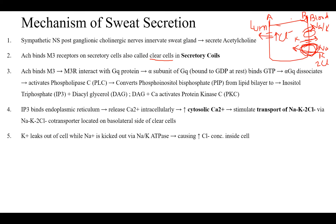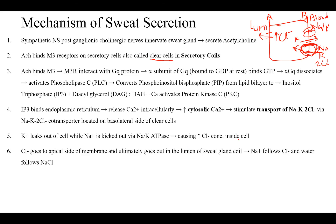Potassium leaks out of the cell while sodium is kicked out via the sodium-potassium ATPase, causing an increase in chloride concentration inside the cell. Chloride goes to the apical side of the membrane and out into the lumen of the sweat gland coil. Sodium now has a higher concentration on the basolateral side, which moves in paracellularly and meets with chloride in the lumen.